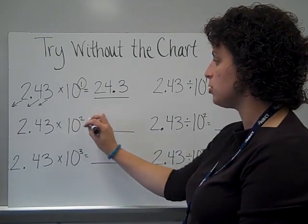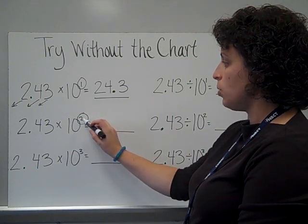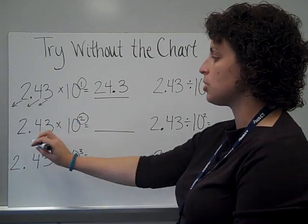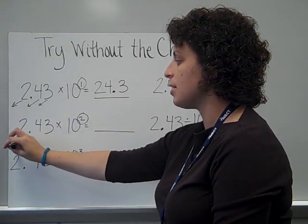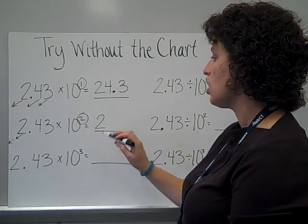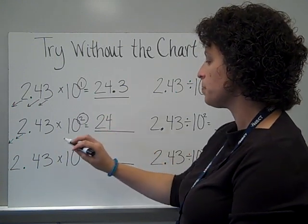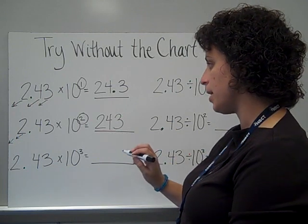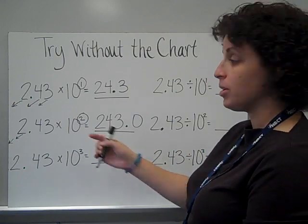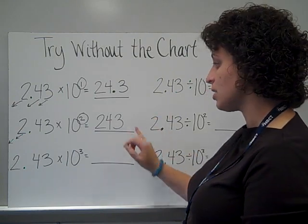This time, 2 and 43 hundredths times 10 squared. The exponent is telling me how many places it's going to have to move — multiplying by two tens, so it's going to make two moves. This 2 has to go from the ones place to the tens, and then to the hundreds. The 4 moves twice: first to the ones place, then a second move to the tens place. The 3 fills the ones place. I do not need to put a decimal or a trailing zero because 243 and zero tenths is the same as just 243.